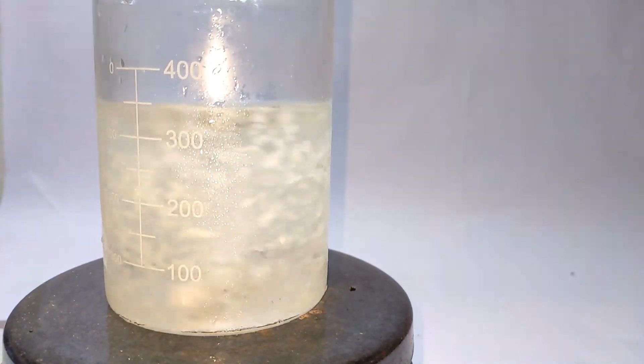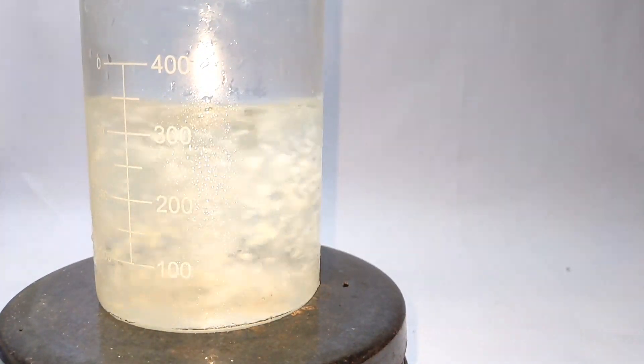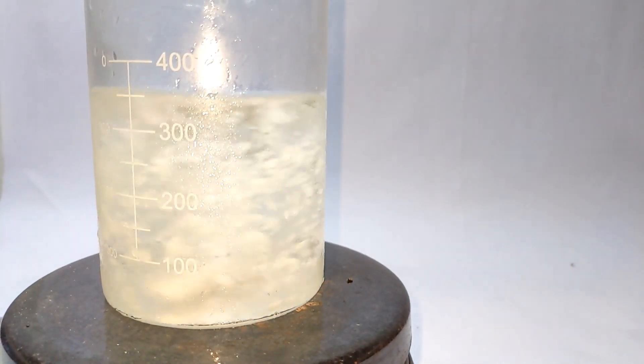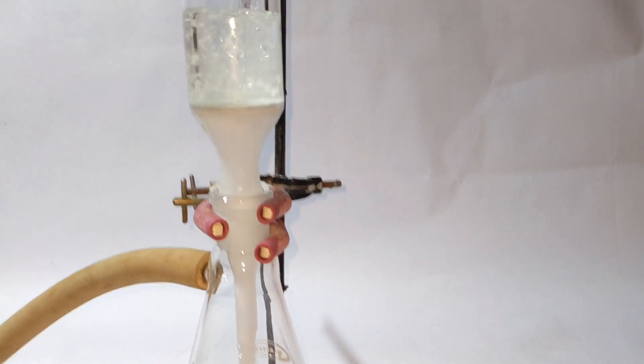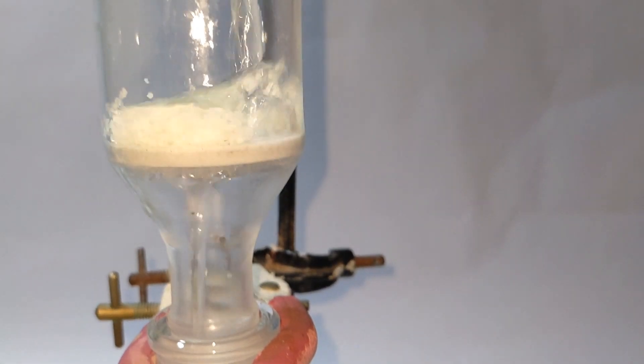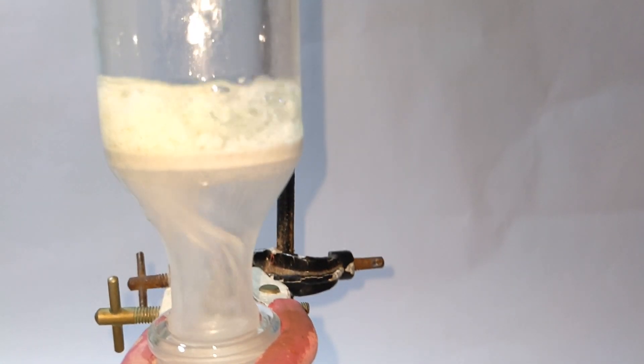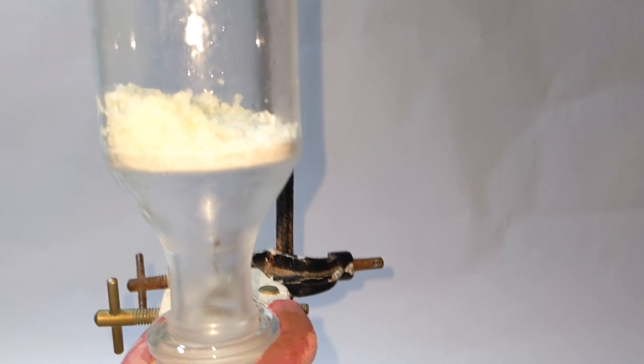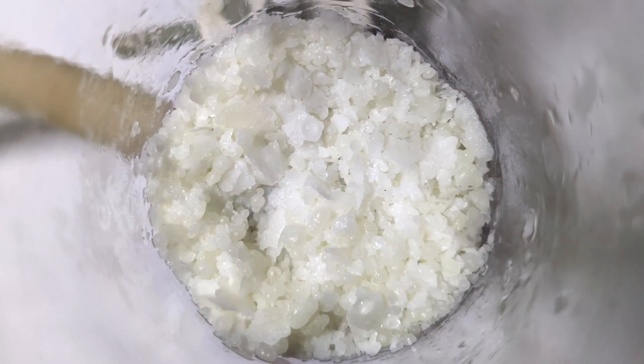This clip just shows the slow motion video of the dinitrochlorobenzene crude product stirring in the ice cold water. It was then vacuum filtered and washed a few times with cold distilled water to remove all the soluble and unreacted reactants and side products. The vacuum was turned on to dry the product. This is the final product 2,4-dinitrochlorobenzene.